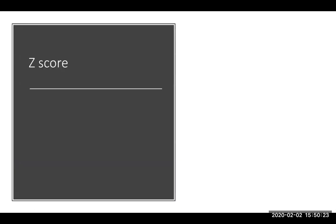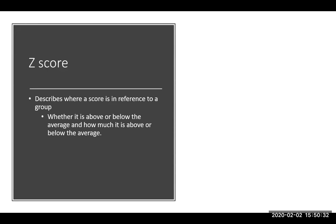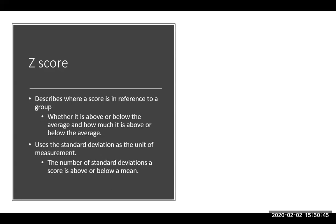We're going to use a Z-score to make a standard score. The Z-score describes where a score is in reference to the group — it tells us whether the person is above or below the average and just how much. The Z-score is in units of standard deviation. We describe a distribution with the mean and a standard deviation, and the Z-score tells us where you are relative to the mean and how many standard deviation units above or below you are. The formal definition: a Z-score is the number of standard deviations a score is above or below the mean.